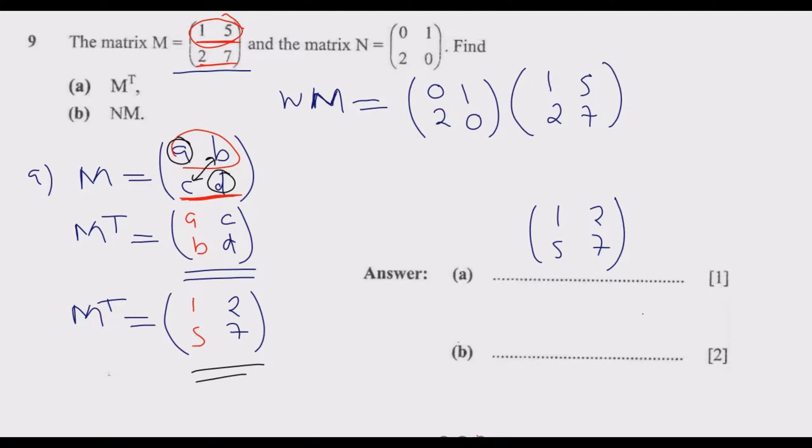When we multiply matrices, we multiply each row with the columns. So for the first row: 0 multiplied by 1 is 0, plus 1 multiplied by 2 is 2. Then the same first row with the second column: 0 multiplied by 5 is 0, plus 1 multiplied by 7 is 7. So we are done with the top row.